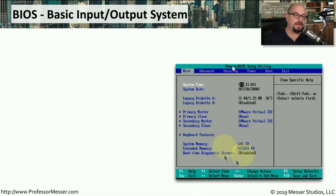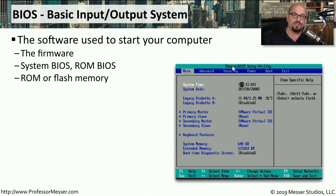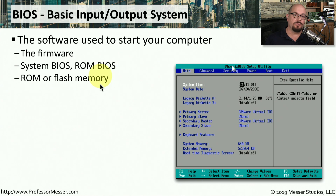The BIOS of your computer is the basic input-output system. It's the firmware or the software that's used to get your computer running. Sometimes you'll hear this referred to as the system BIOS or the ROM BIOS. The term ROM BIOS refers back to the days when this software was stored on read-only memory chips on the motherboard. Our modern computers store this BIOS software in flash memory, so we're able to upgrade the BIOS by using an application rather than removing and replacing chips on the motherboard.